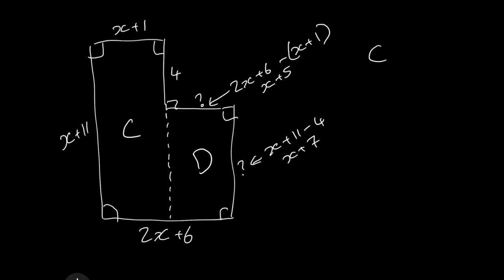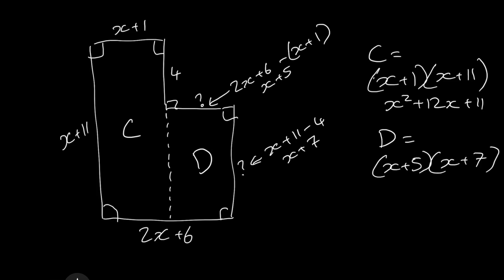So we can work out the area of C because we know that it is x plus 1 which is its width times by its height which is x plus 11 which gives us x squared plus 12x plus 11.